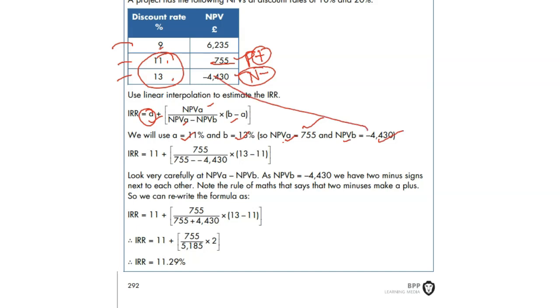Let's put it into the formula. 11 A, this A is 11, positive percentage plus positive value, 755. Positive value minus, then there's another minus, because this is a minus figure. 4430. This minus minus becomes plus, right?